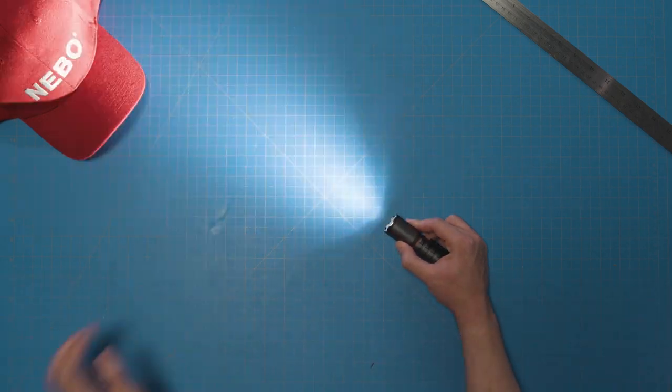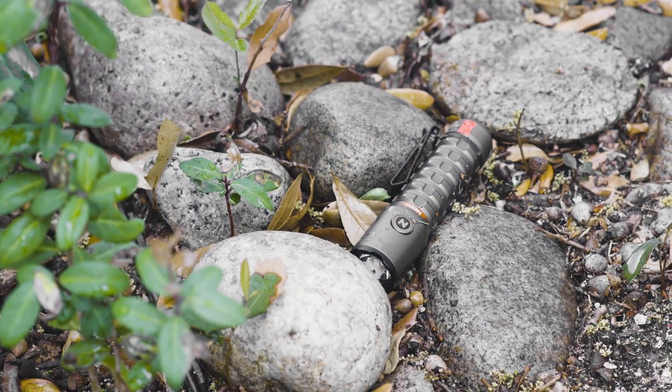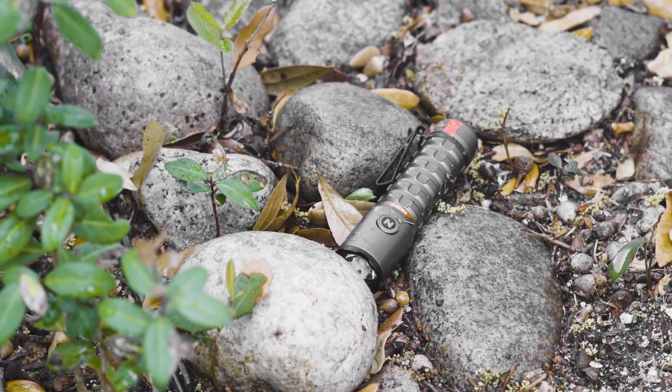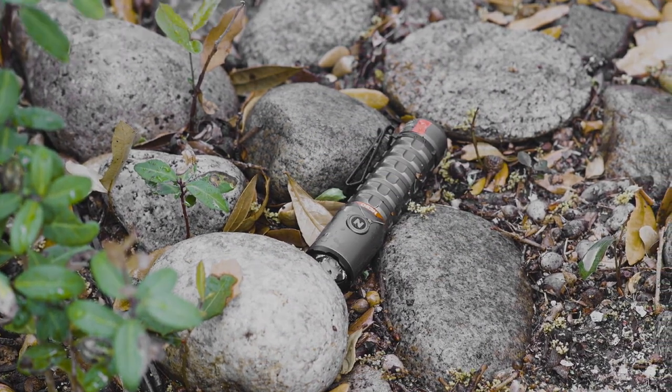The last few things I want to mention about the Torchy 2K are that it is water-resistant with an IPX7 rating and impact-resistant with a 1 meter drop rating.